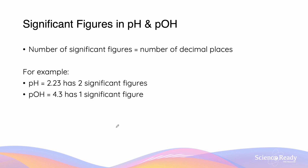Something very important when doing pOH and pH calculations: the number of significant figures is expressed as decimal places instead. So if I have two significant figures for my pH, it's given to two decimal places, such as 2.23. The same applies for one significant figure — that's one decimal place. Decimal places and significant figures are interchanged for pH and pOH.